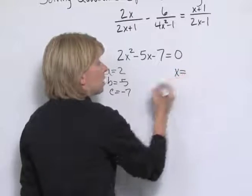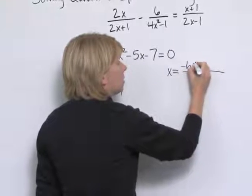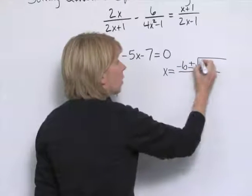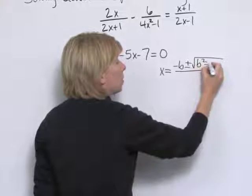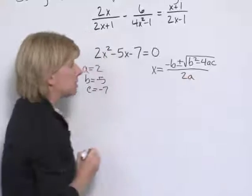And I'll just write the general quadratic formula first. x equals negative b plus or minus the square root of b squared minus 4 times a times c, all over 2 times a.